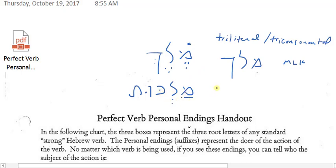Melek means king. Malkuth means kingdom. Okay.